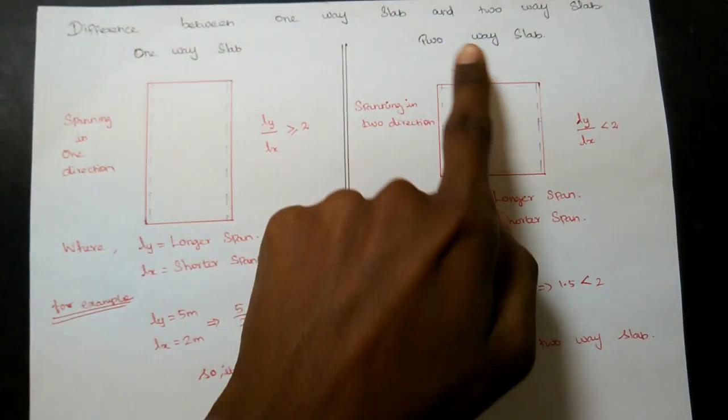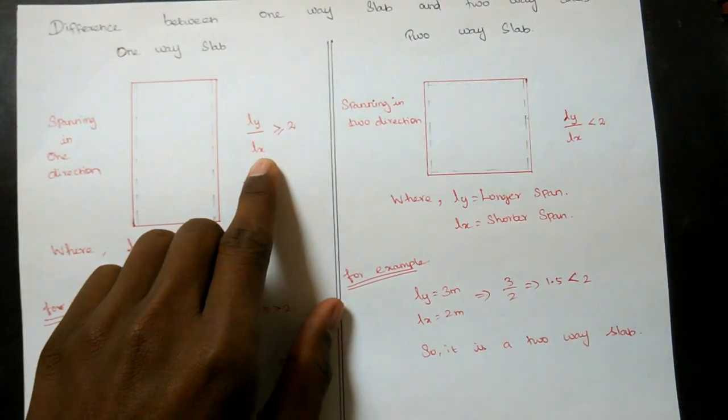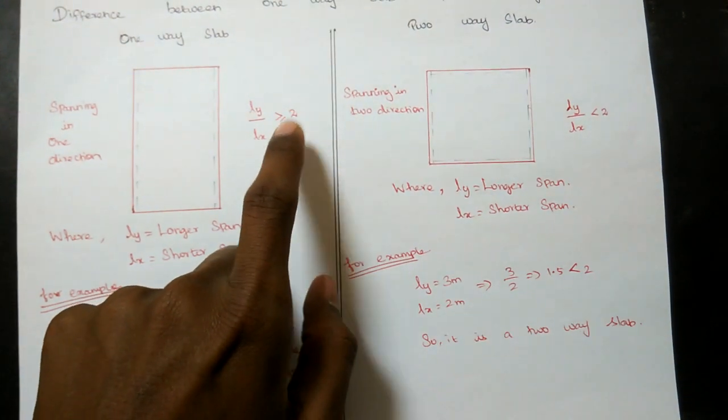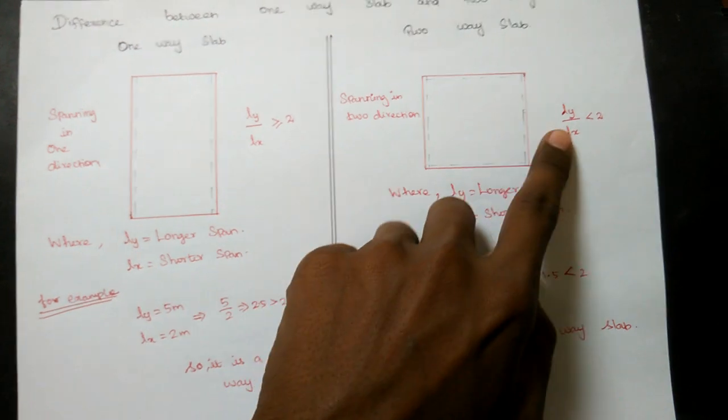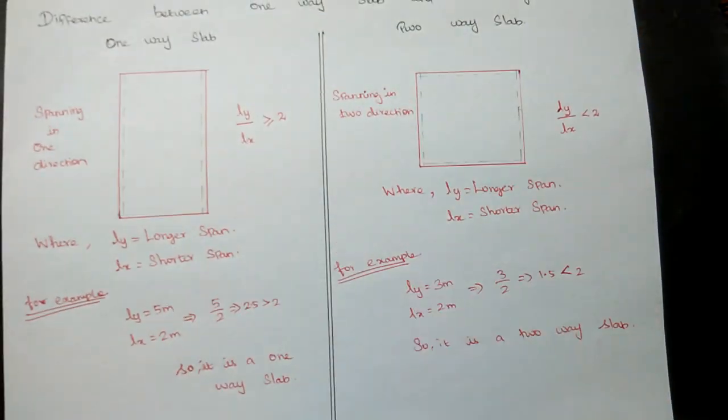Differentiating between One-Way Slabs and Two-Way Slabs is very easy for us. If Ly by Lx is greater than or equal to 2, it is a One-Way Slab. If Ly by Lx is less than 2, it is a Two-Way Slab.